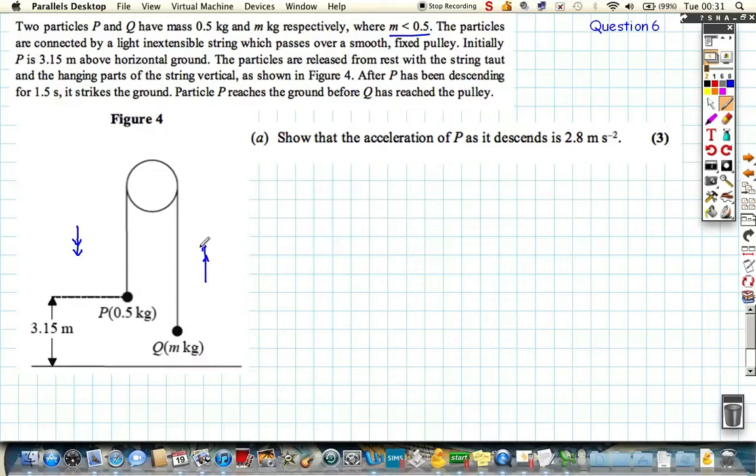They're connected by a light inextensible string, so we know that the acceleration up is going to be the same as the acceleration down. It's a smooth pulley. Initially, P is 3.15 metres above the ground. It starts off at zero and it's released from rest, so it's held and just let go.